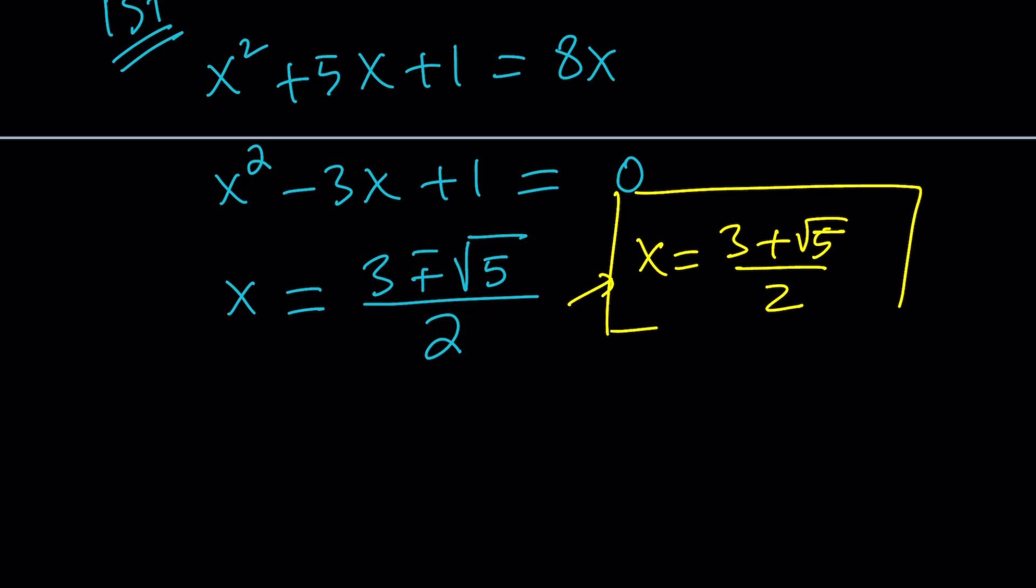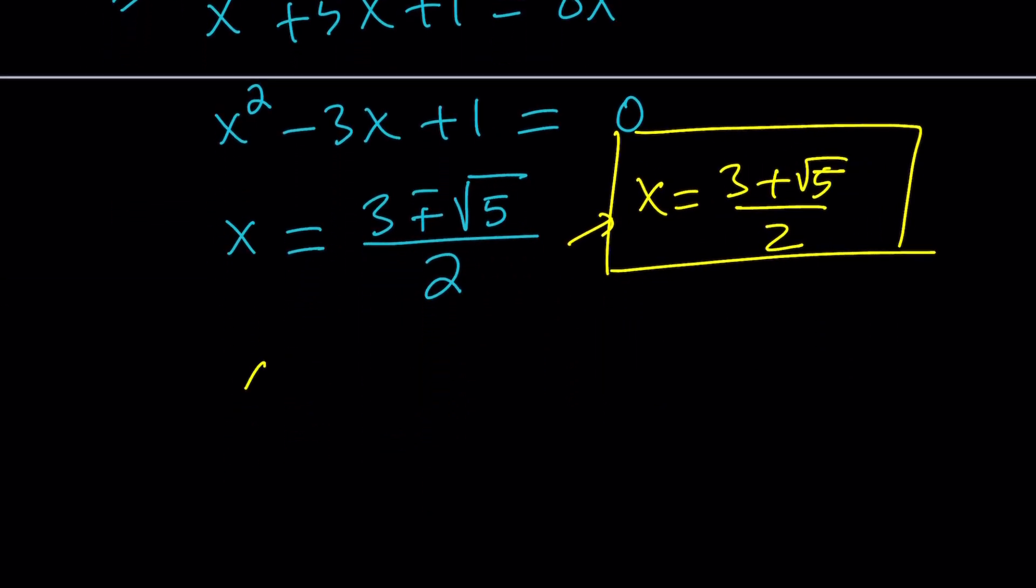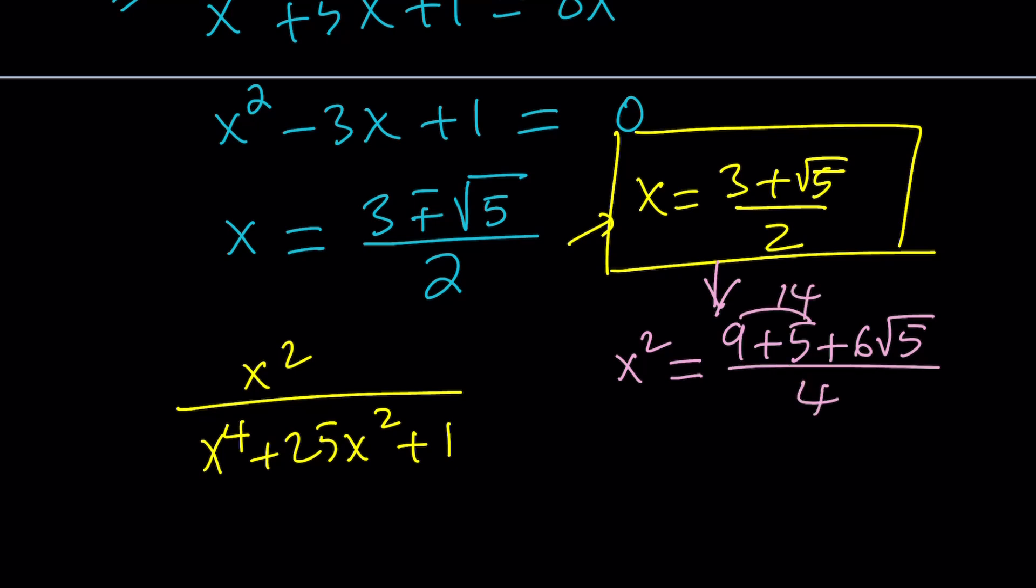Let's replace x with that in the second expression. Our second expression is x squared over x to the 4th plus 25x squared plus 1. It might make sense if you evaluate x squared separately and also x to the 4th. So let's go ahead and square this expression first. 3 squared plus square root of 5 squared plus 2ab is going to give us 6 root 5 divided by 4. This is 14, so it's 14 plus 6 root 5 divided by 4. When you simplify this, divide everything by 2, you're going to get 7 plus 3 root 5 over 2. So that's going to be the value of x squared.